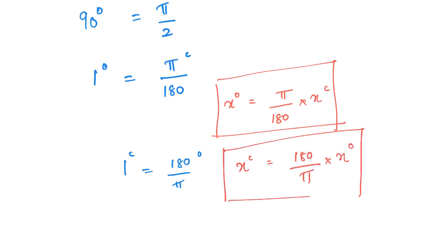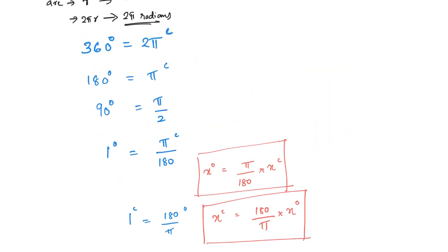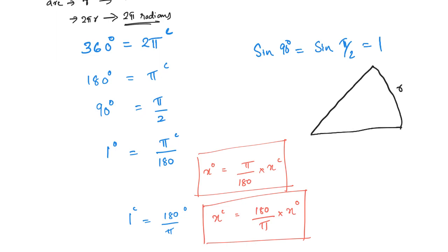1 radian equals 180/π degrees, and x radians equal to 180/π × x degrees. So we can convert radians to degrees and degrees to radians. For example, sin 90° equals sin(π/2). Thank you for listening. Please check in the comments.